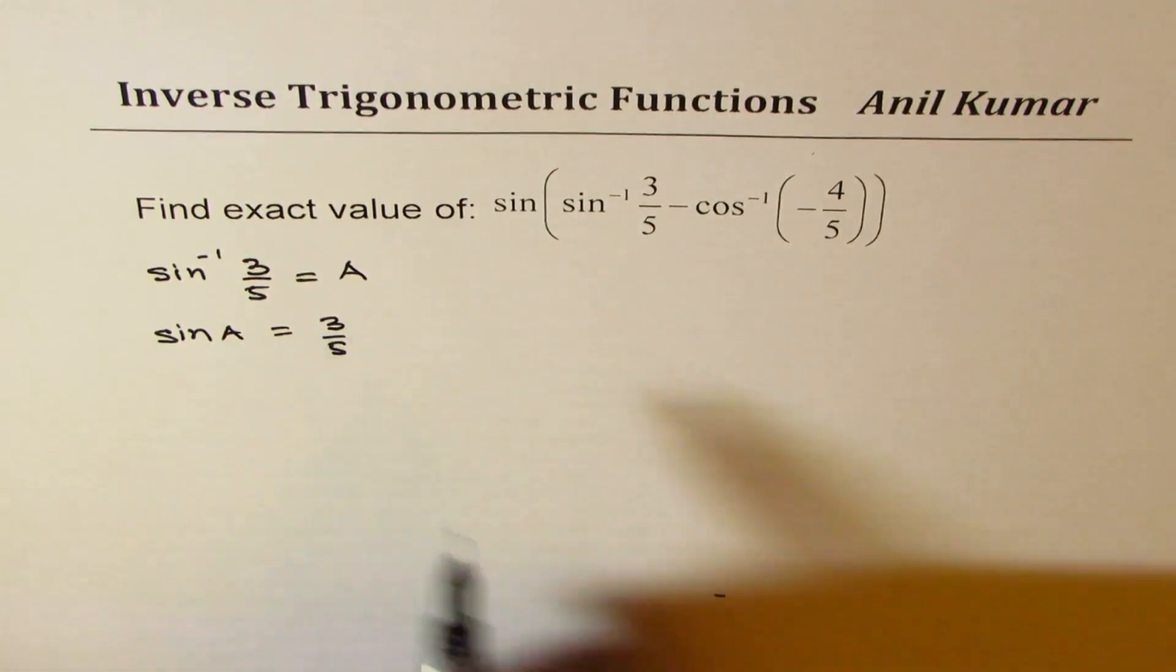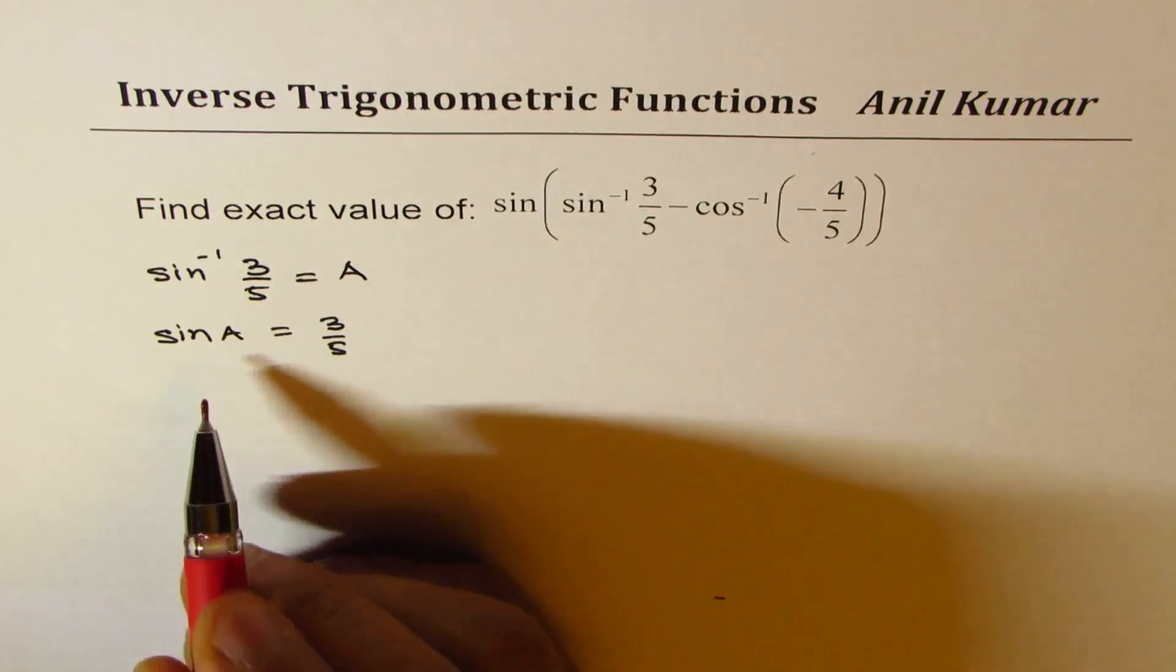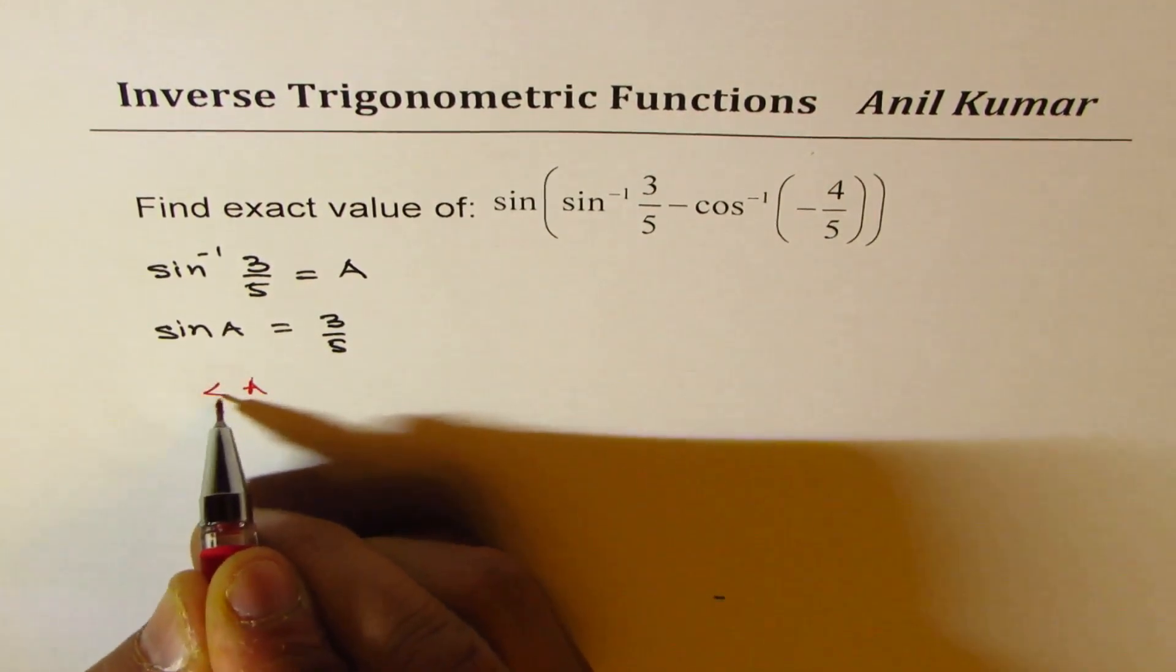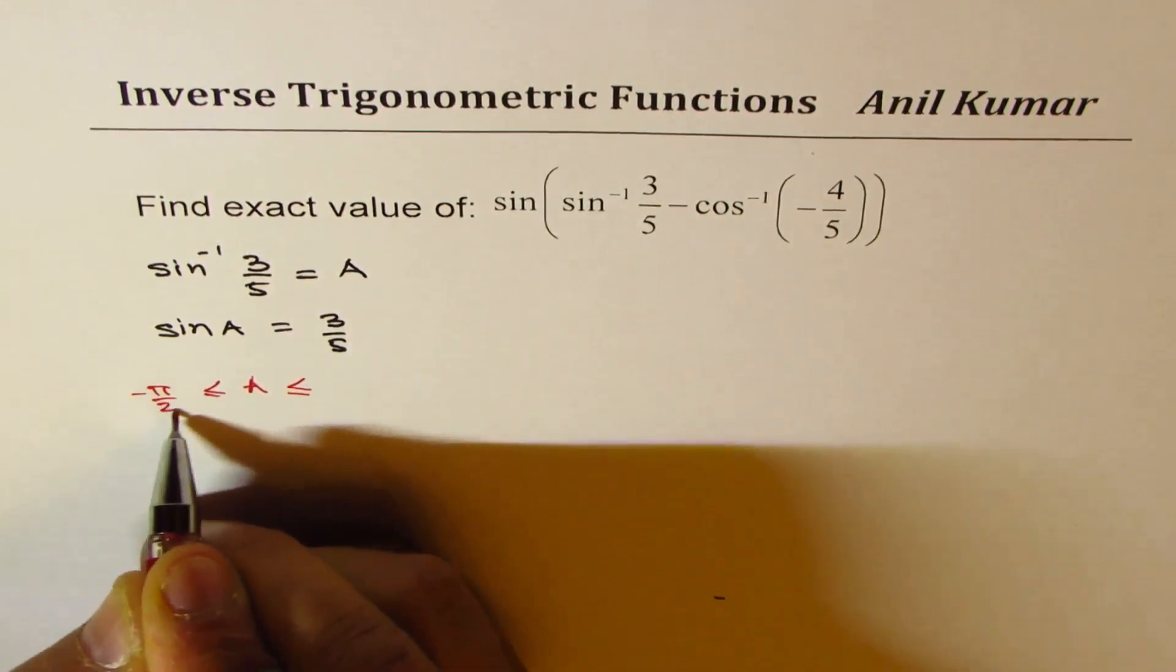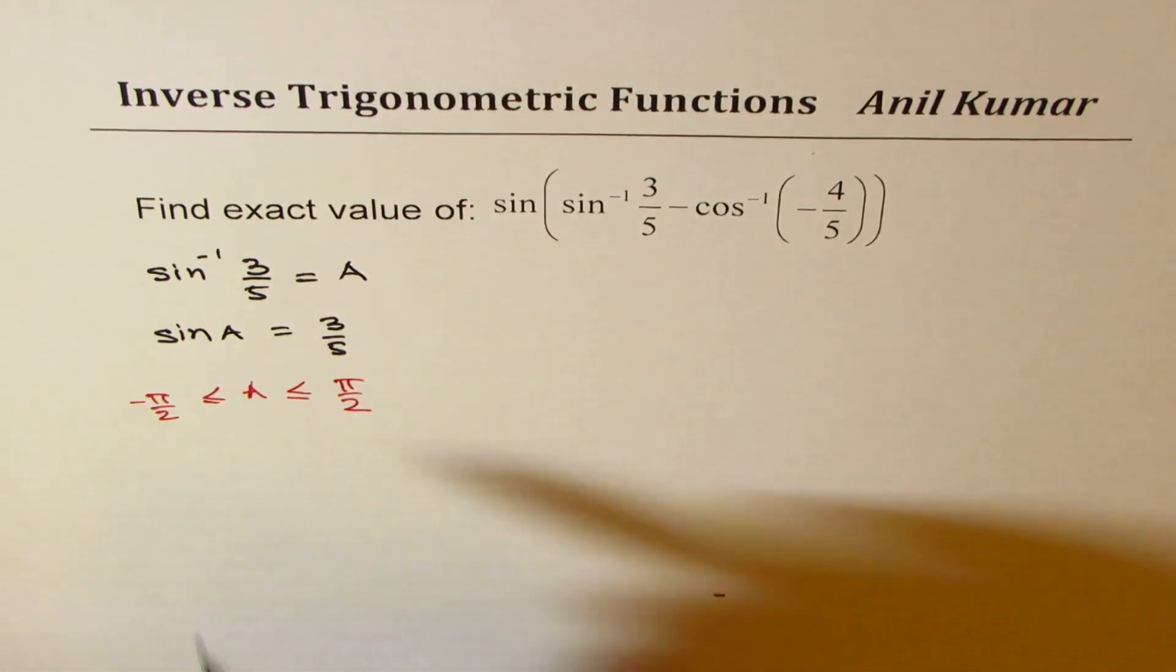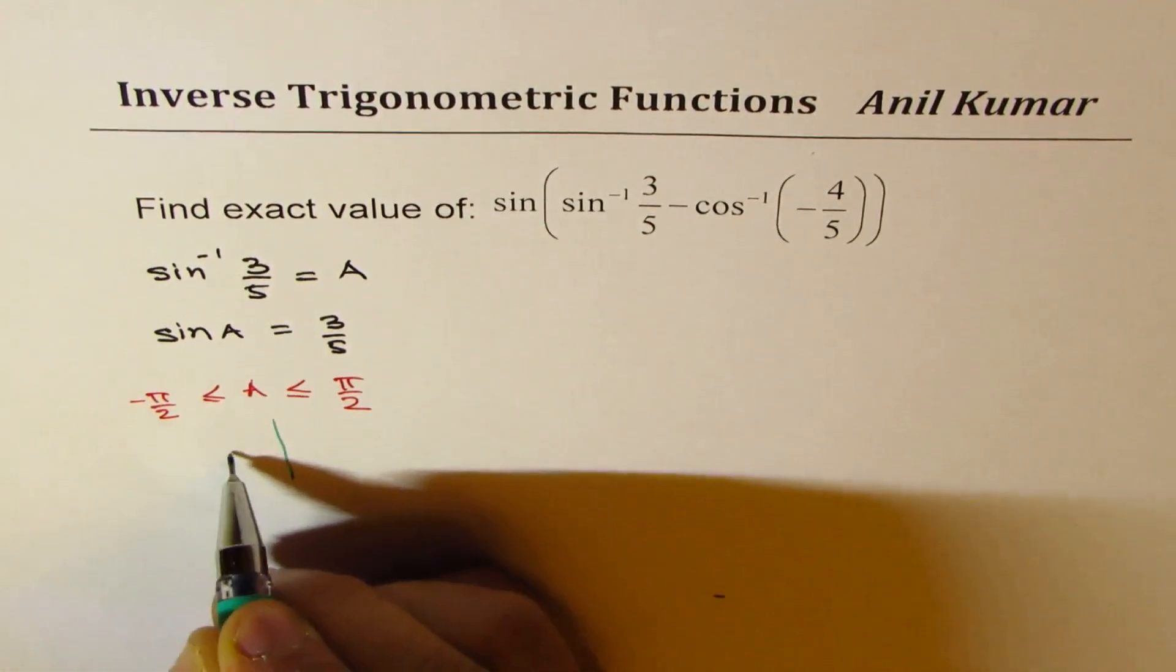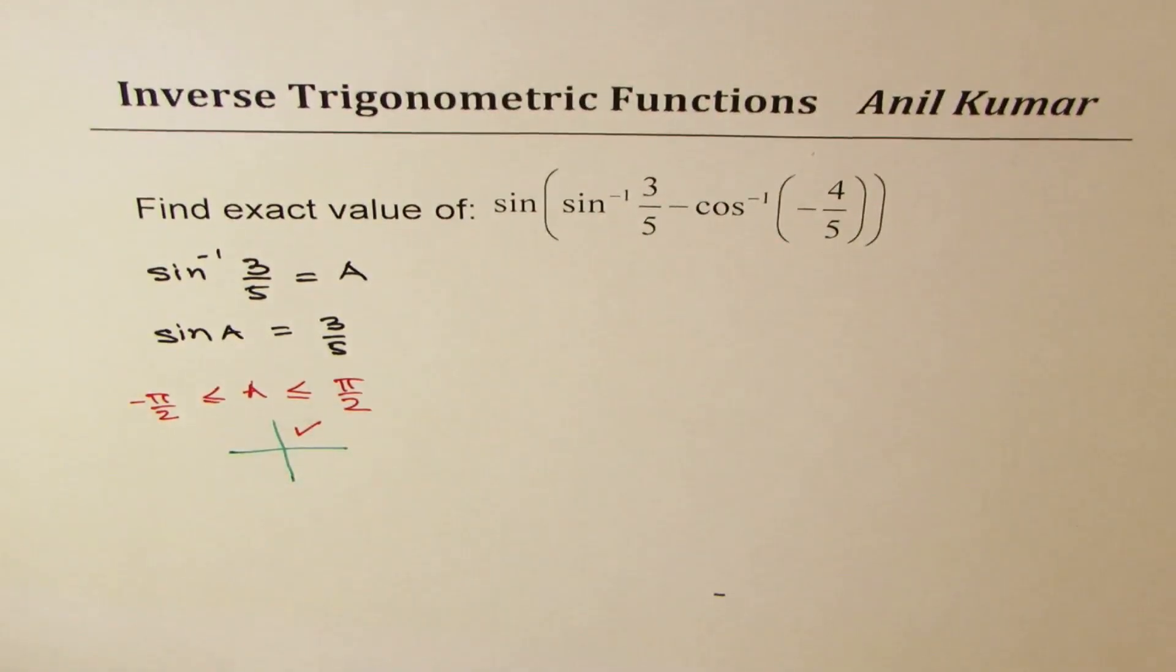Now, sine A is 3 over 5 and we know that A should be within the interval minus pi by 2 to plus pi by 2, correct? Since sine A is positive, we are talking about the value being in quadrant 1, since sine A is positive.